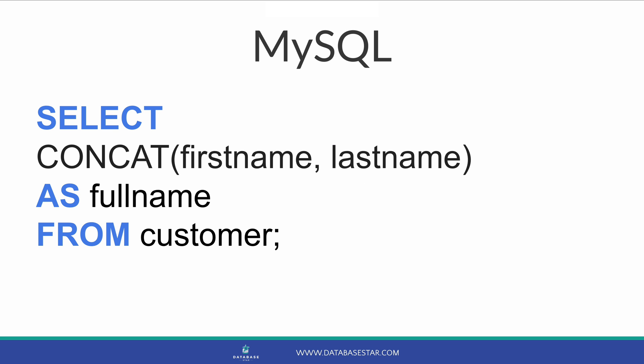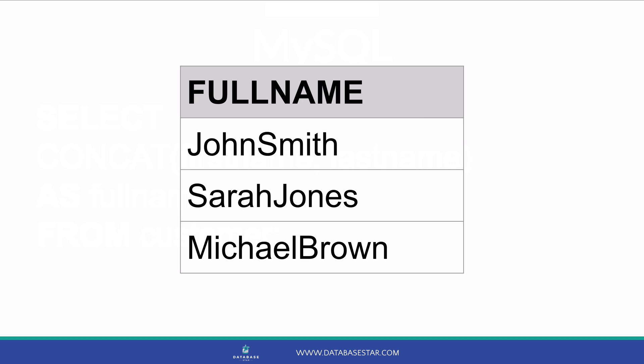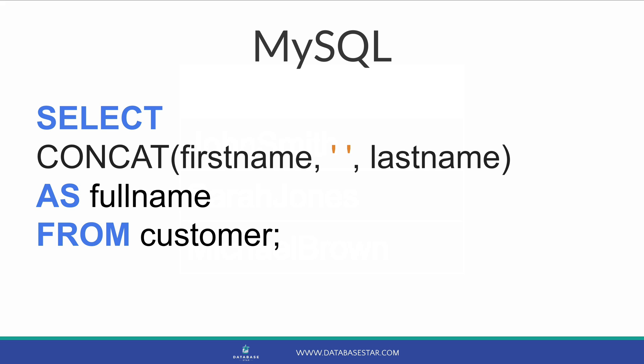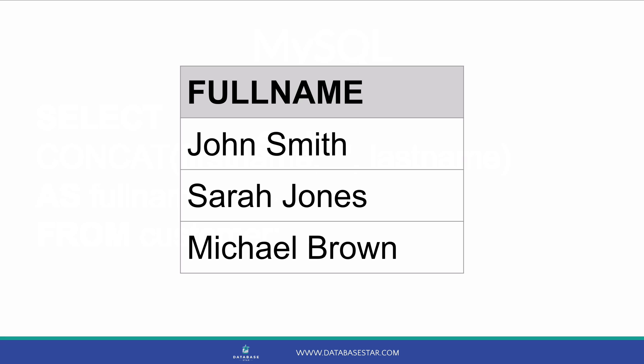To use the CONCAT function in MySQL, add each string you want to concatenate inside the function. For example, we can select the first name and last name inside CONCAT to see these columns concatenated. When we run the query, there are no spaces between the names, but we can specify those inside the CONCAT function. The CONCAT function in MySQL supports multiple strings just like SQL Server. This example includes a first name column, a space, then a last name column, and we can see the combined output.